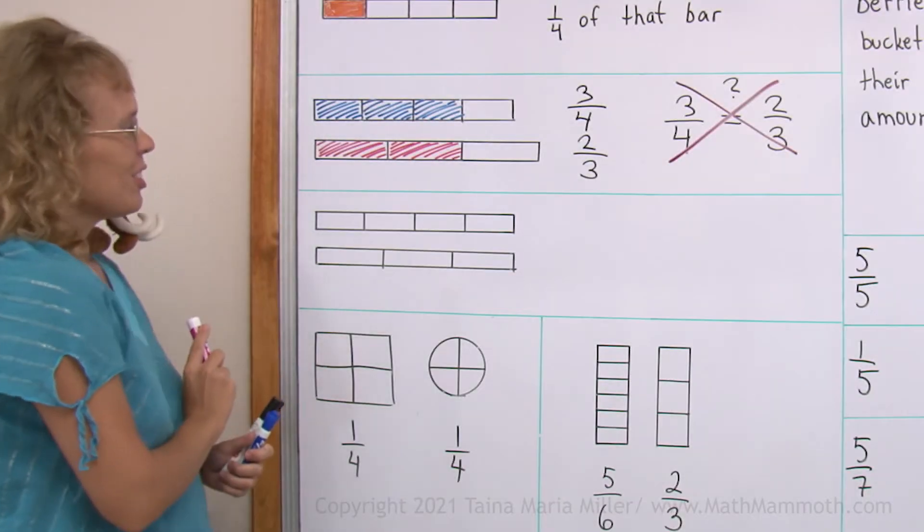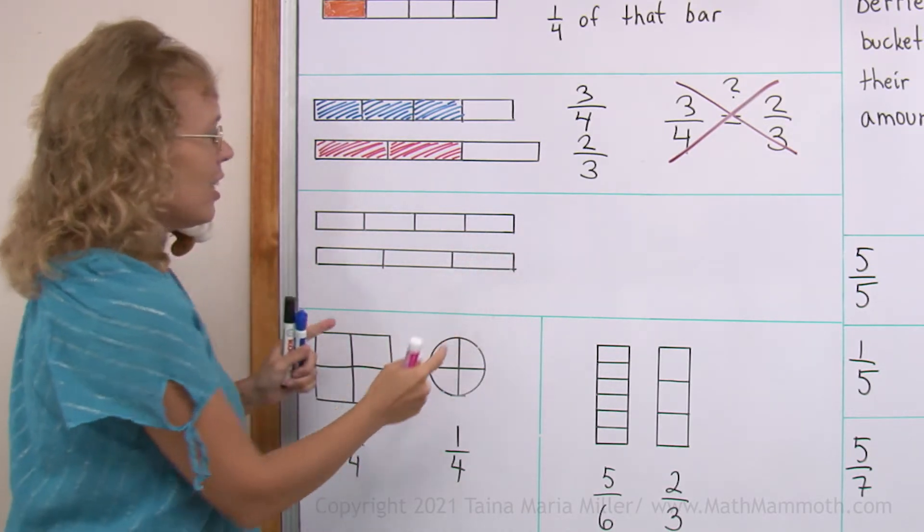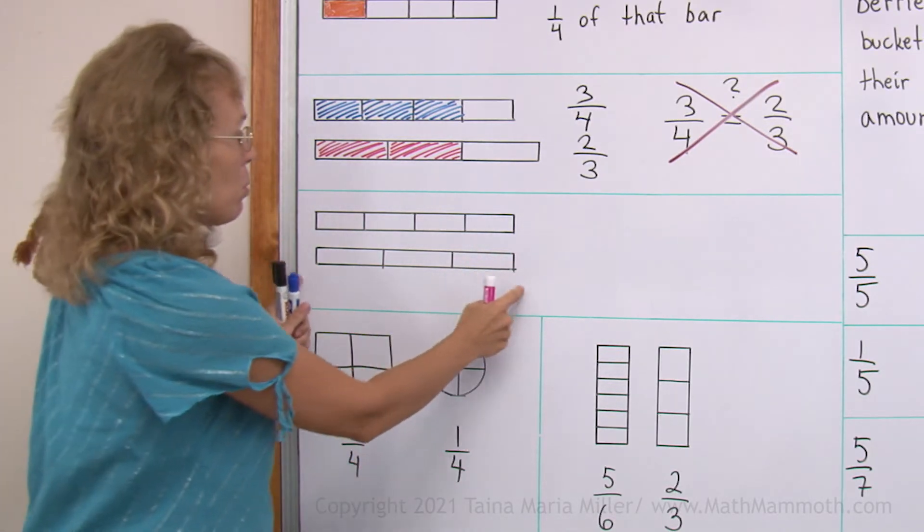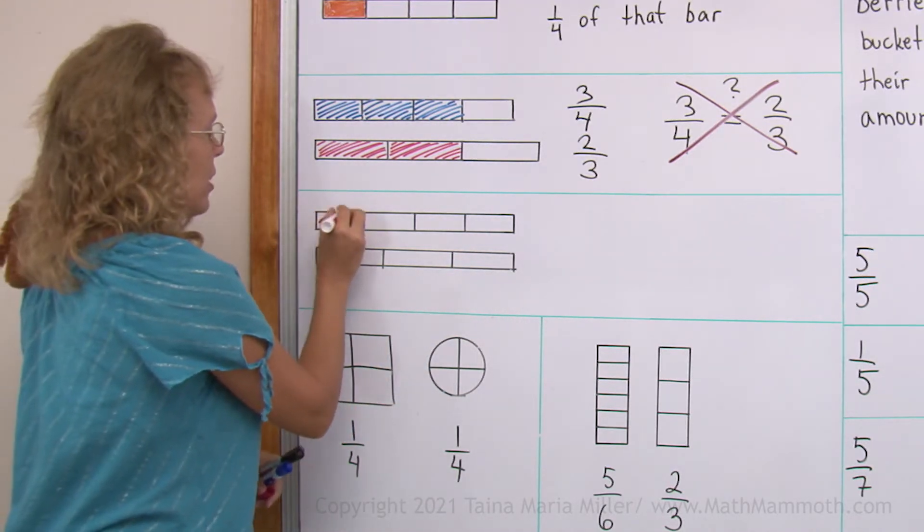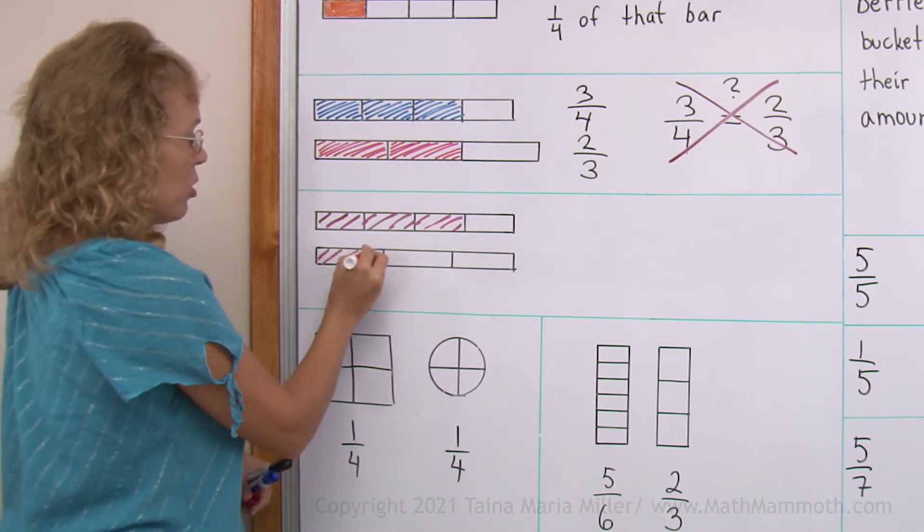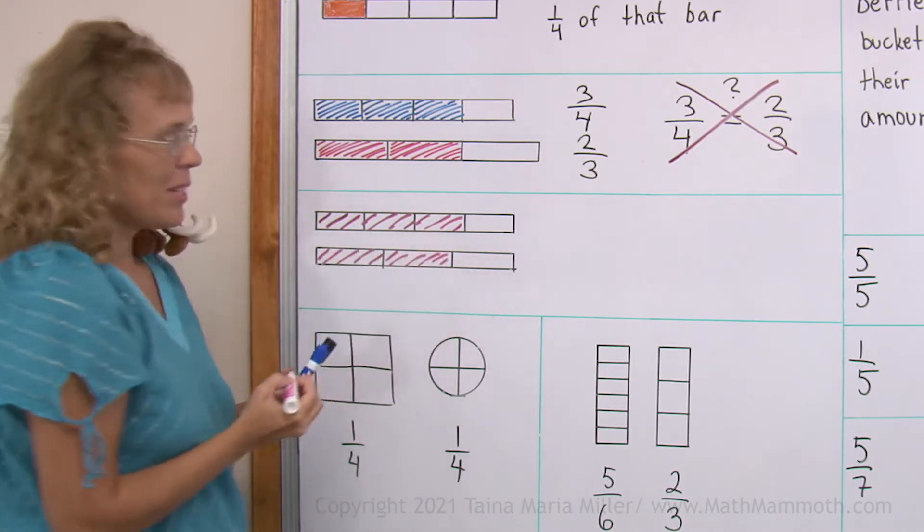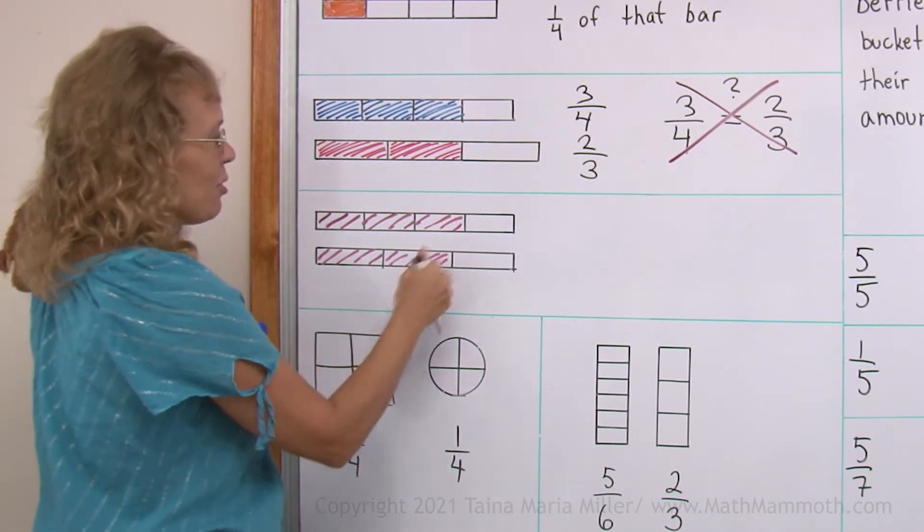In my next picture, we have two fraction bars that are the same length. So now we have two wholes that are the same size. And now if I take three-fourths of this one and then two-thirds of this one, now we can compare these two fractions. You can see two-thirds is less.